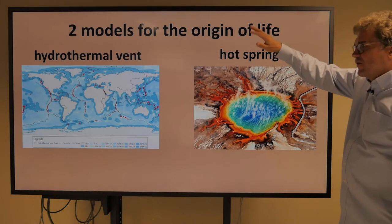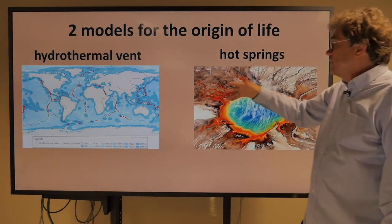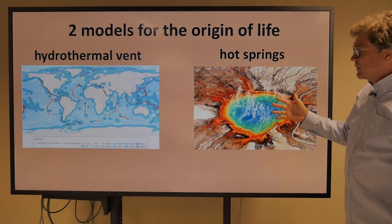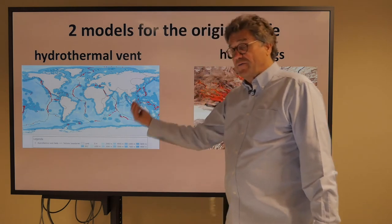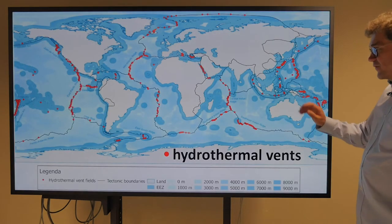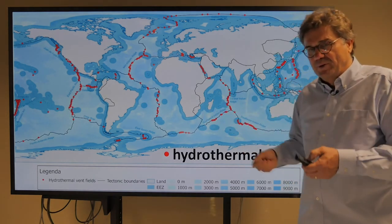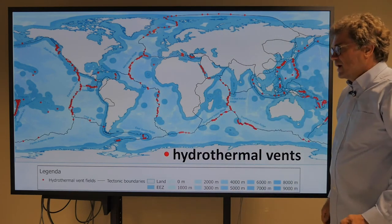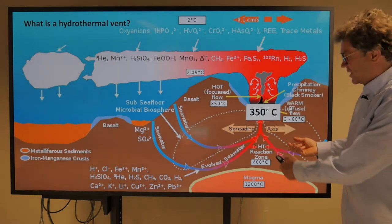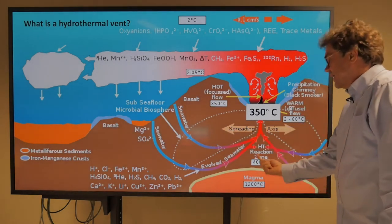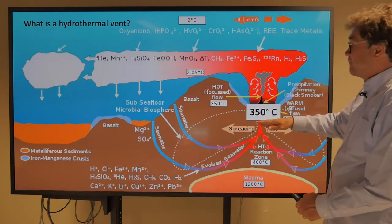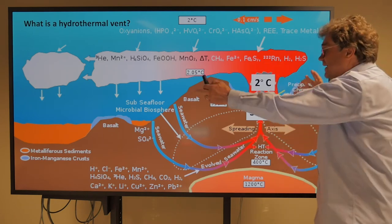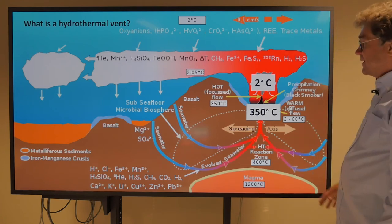There are two models for the origin of life: one at hydrothermal vents at the bottom of the ocean, and the other at hot springs at the surface. Hydrothermal vents are at the red spots where continents are being pulled apart and magma comes up. A hydrothermal vent is essentially a spreading axis with a hot reaction zone at 400°C, 350°C — and then you quickly go to the temperature at the bottom of the ocean, around 60°C. All these dissolved things get taken out of solution and pile up around it.